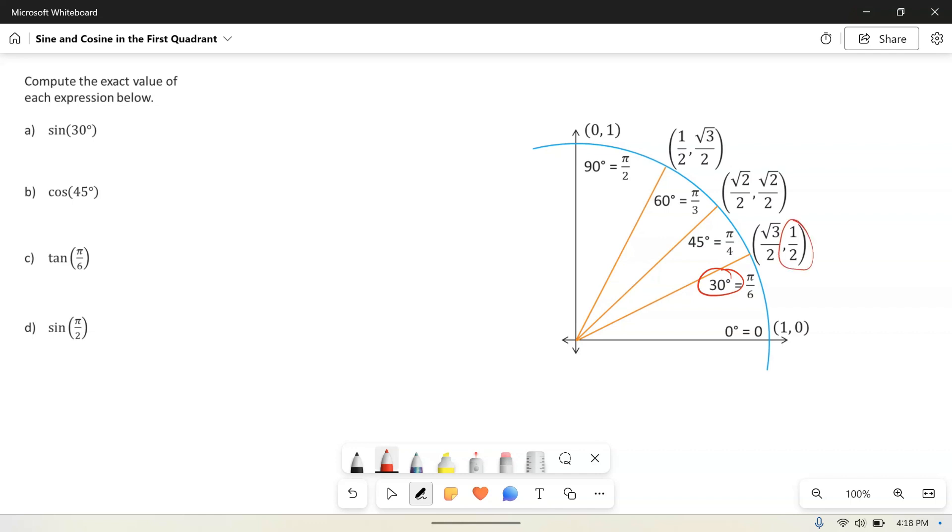The coordinates, the terminal point for 30 degrees is square root of 3 over 2 for x, and then 1 half for y, and so we're going to say that y is 1 half.